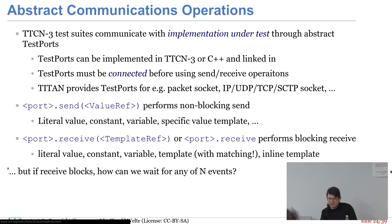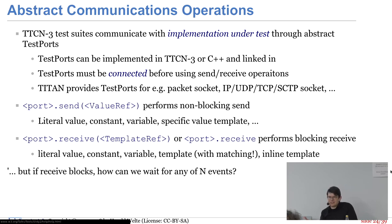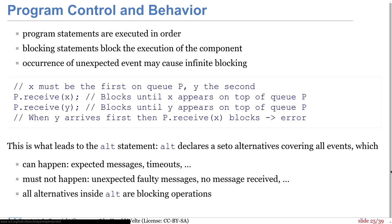Auf Test-Ports kann man senden – einen Wert, eine Konstante, Variablenwerte, oder Send-Templates. Beim Receive kann man gleich ein Receive-Template reinschreiben. Wenn Receive blocking ist, was macht man dann, wenn N verschiedene Dinge passieren können? Da kommen interessante ALT-Statements ins Spiel. Erst mal reines Blocking-Receive: P.receive(X) und danach Y – das blockiert unendlich lang.